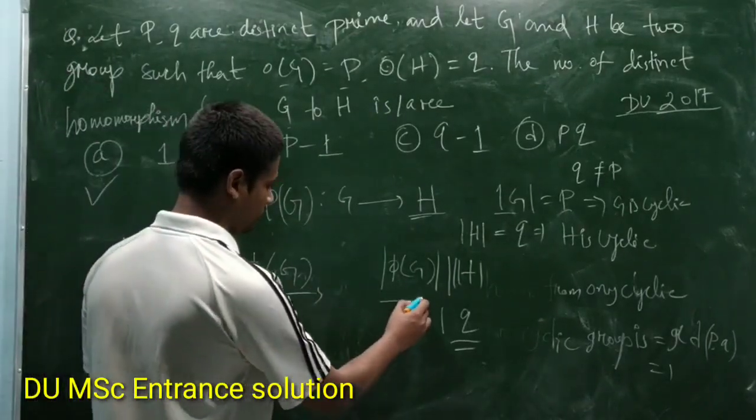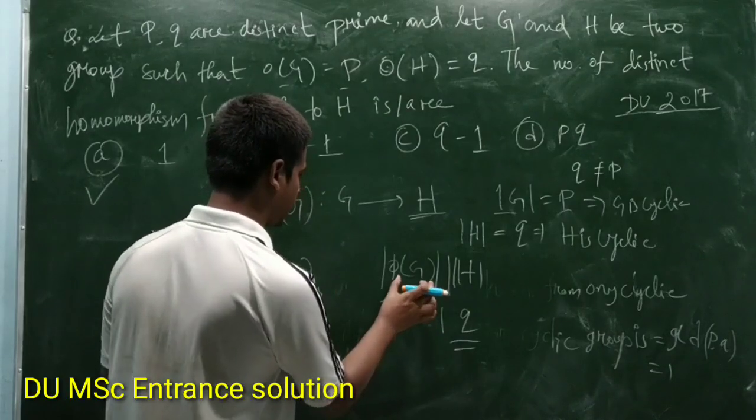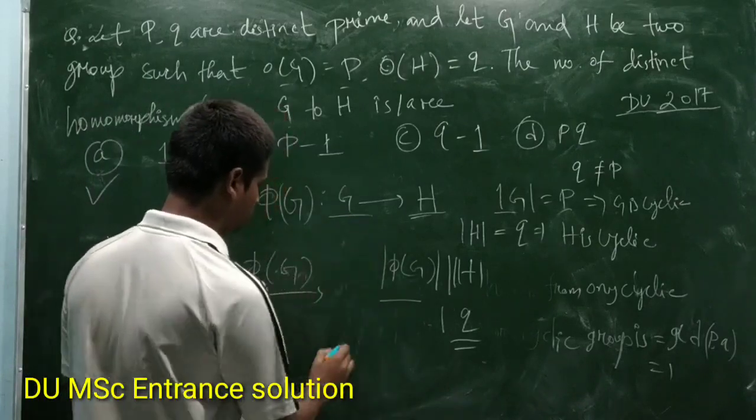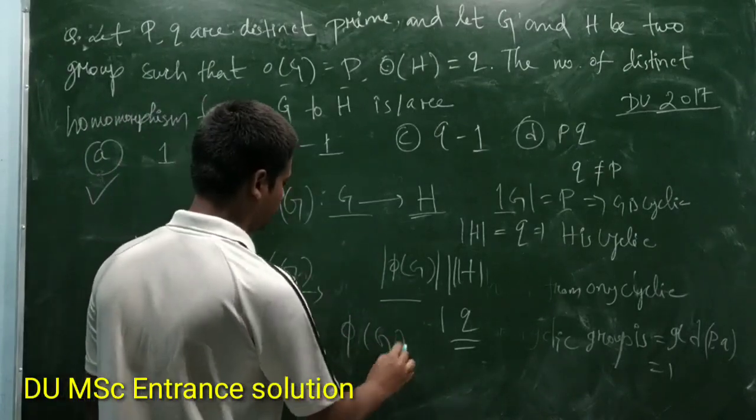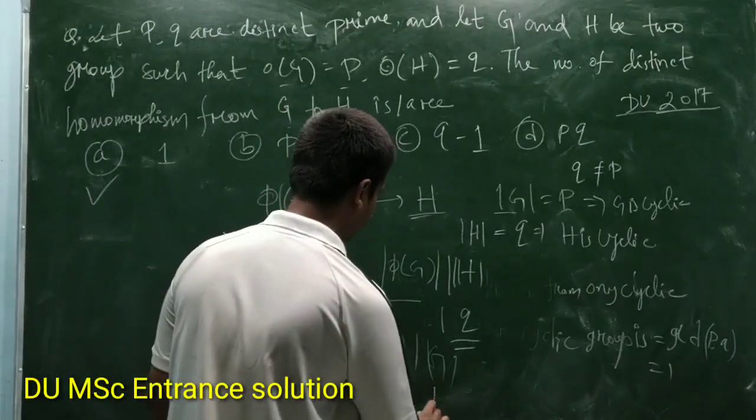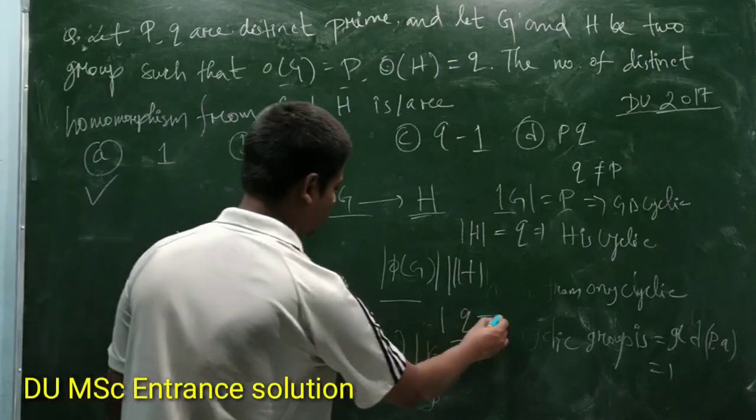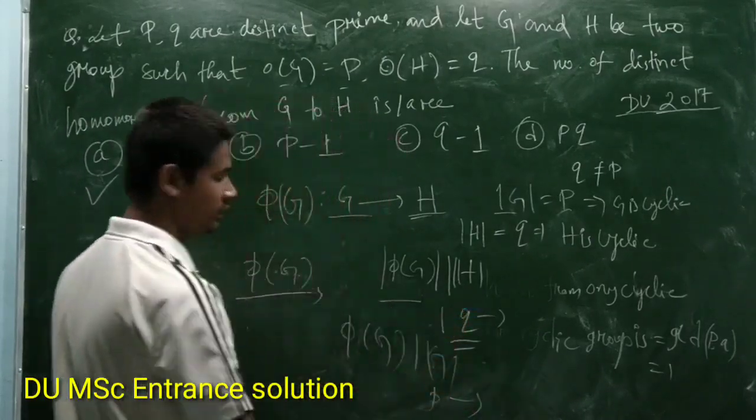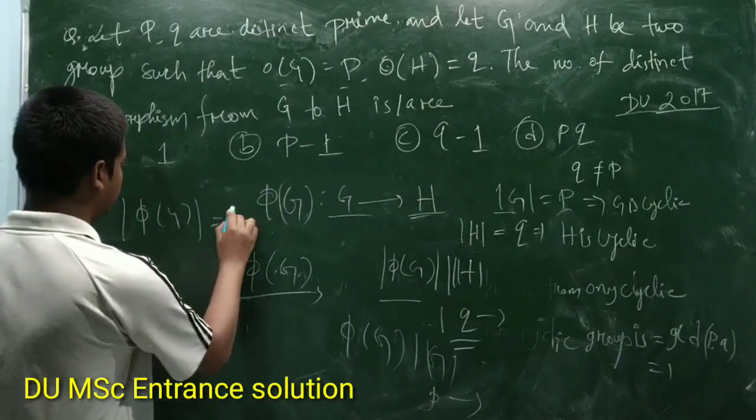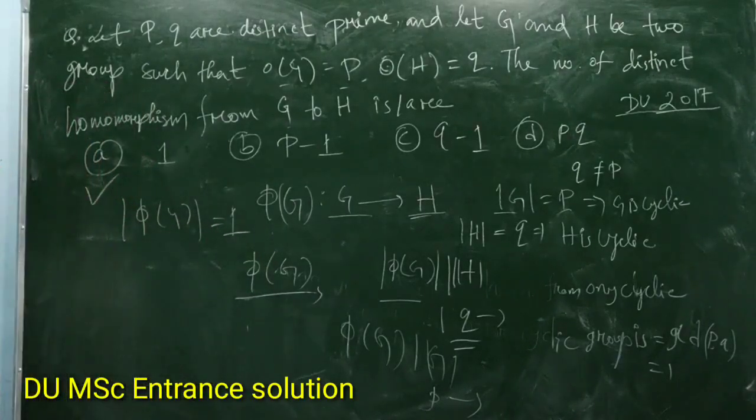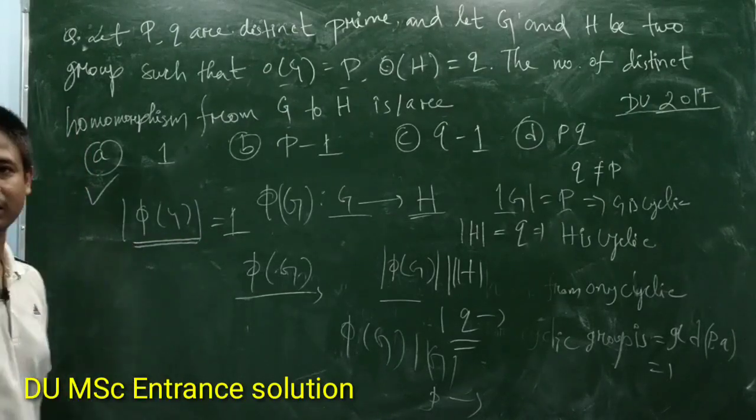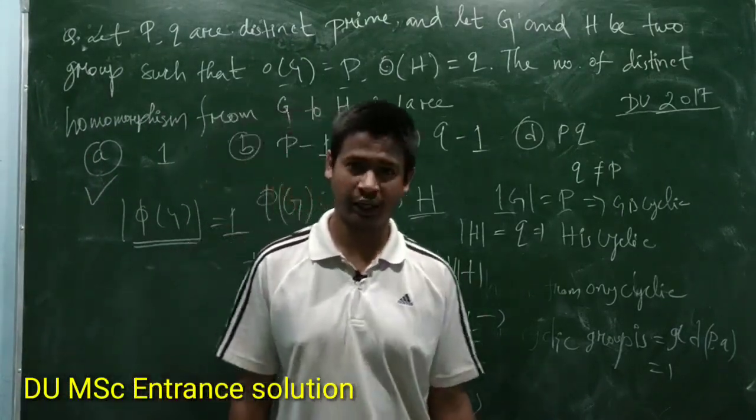this is a quotient group, so homomorphism again divides group G. So Phi(G) also divides order of G, so it also divides P. But they're prime and distinct, right? So definitely order of Phi of G is one. So definitely homomorphism will be only the trivial homomorphism. So this is the solution, thank you.